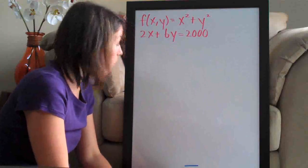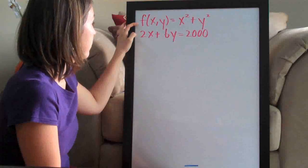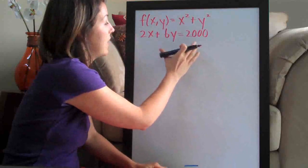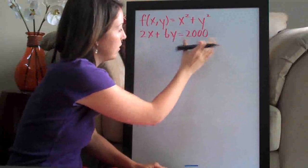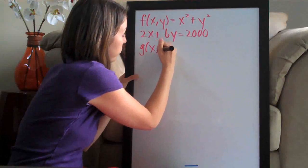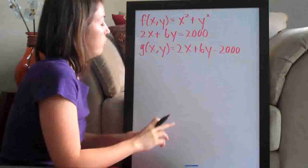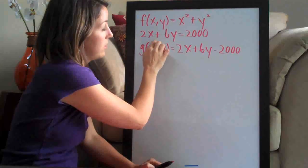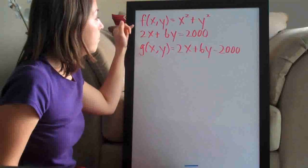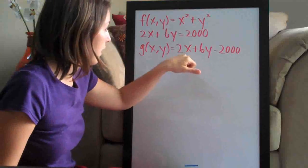The first thing we want to do is convert the constraint equation so that it is in the same form as f(x,y). We do that by setting it equal to zero — getting everything on one side. So we change it to g(x,y) = 2x + 6y − 2,000. All we did was subtract 2,000 from both sides. It's very common to use f as the primary function and g as the constraint equation.